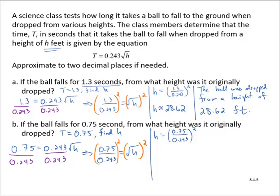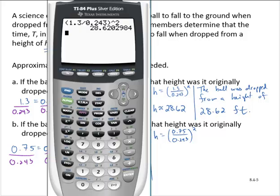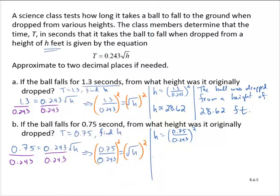Again, let's use a calculator. So we have 0.75 over 0.243. Close it, raise it to the second power, and that's to two decimal places, that's 9.53.